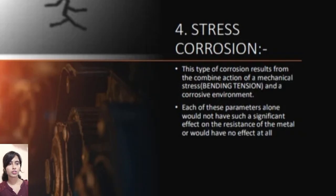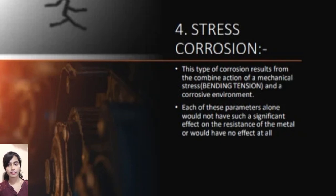Stress corrosion. This type of corrosion results from the combined action of mechanical stress and a corrosive environment. Each of these parameters alone could not have such a significant effect on the resistance of the metal, or could have no effect at all.